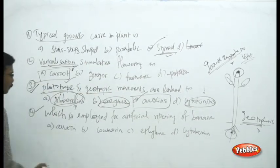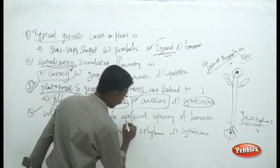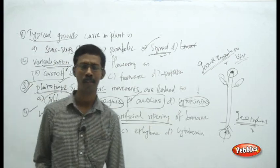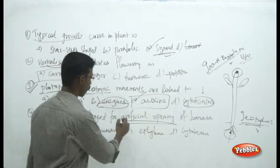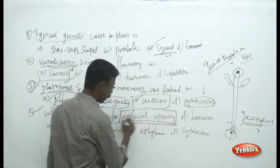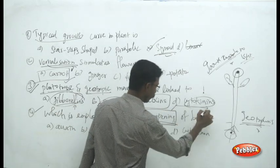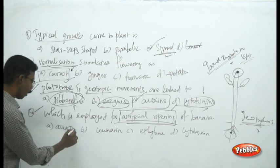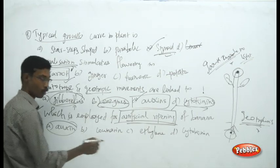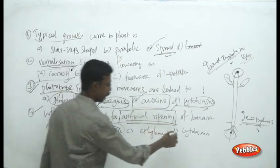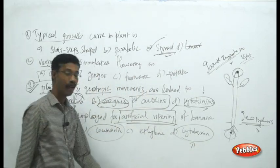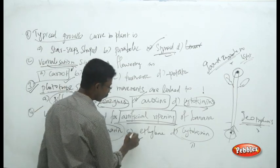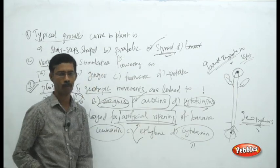Next question: which is employed for artificial ripening of banana? Auxins, coumarins, and cytokinins are plant-promoting hormones. Ethylene as a gas can promote artificial ripening. You should know about ethylene — normally the mature fruit produces ethylene gas. Not the ripened fruit, but the unripe matured fruit produces ethylene gas naturally.